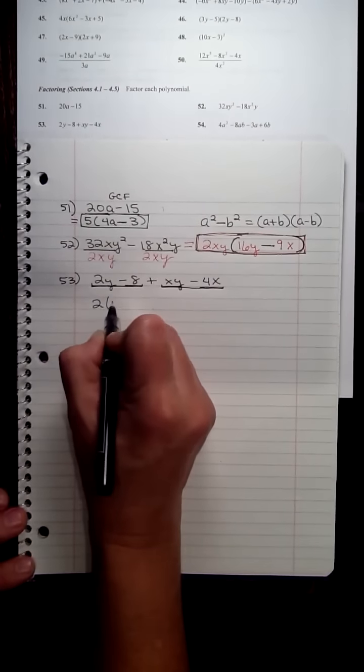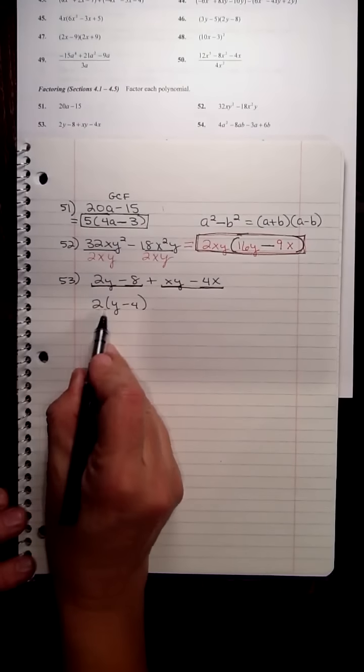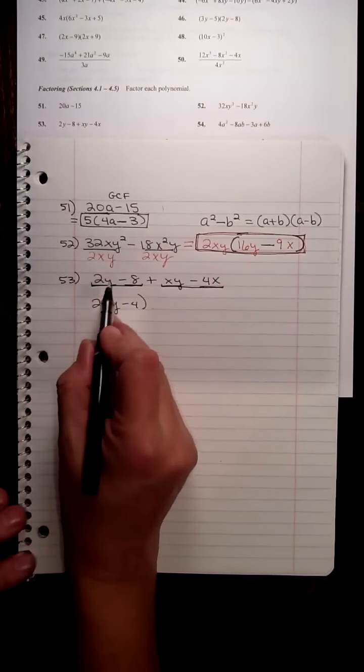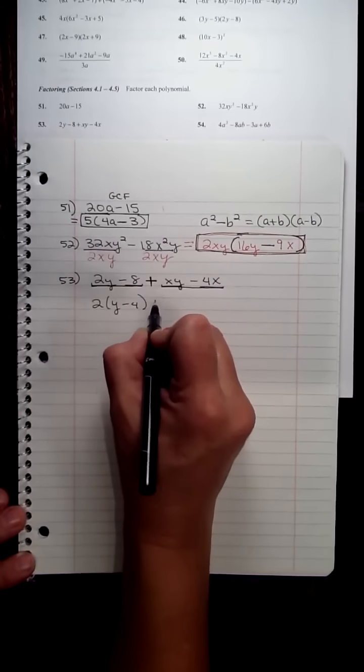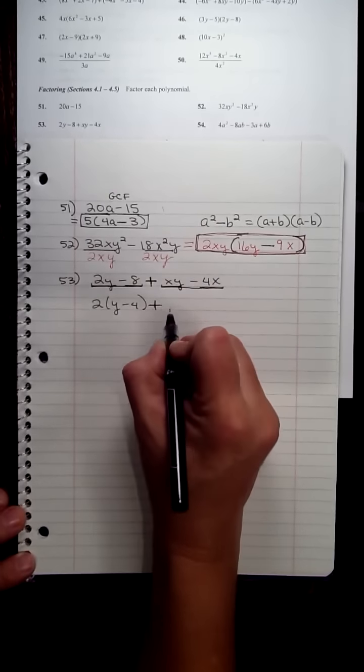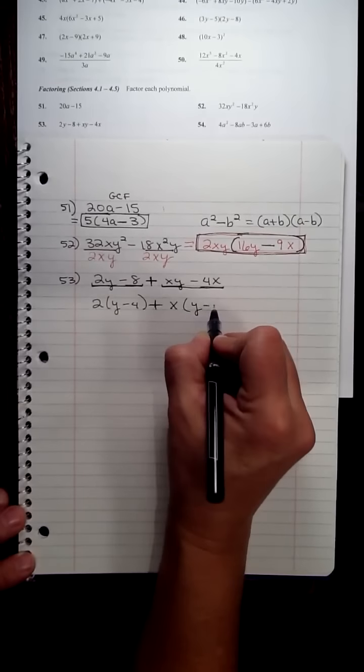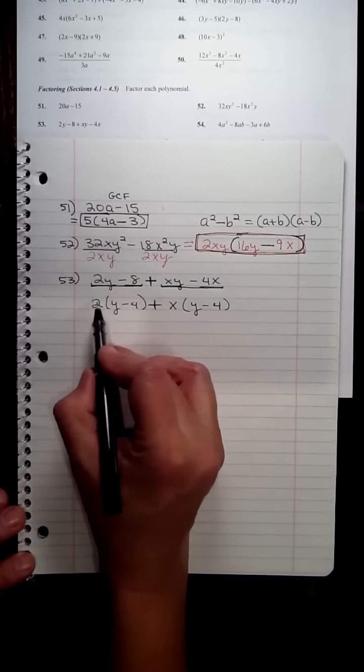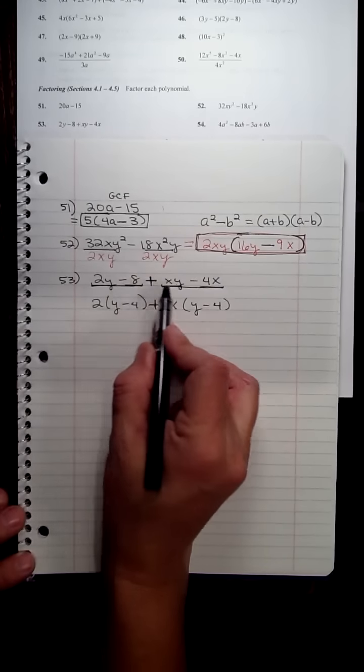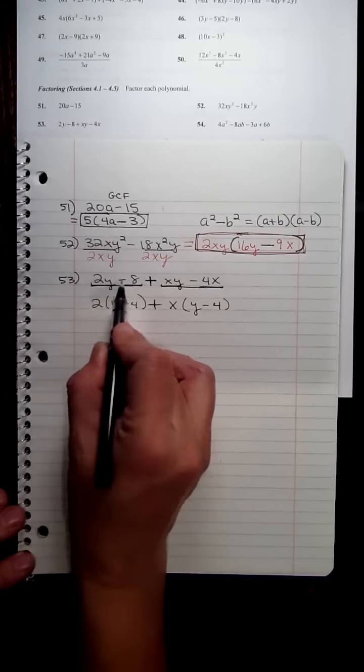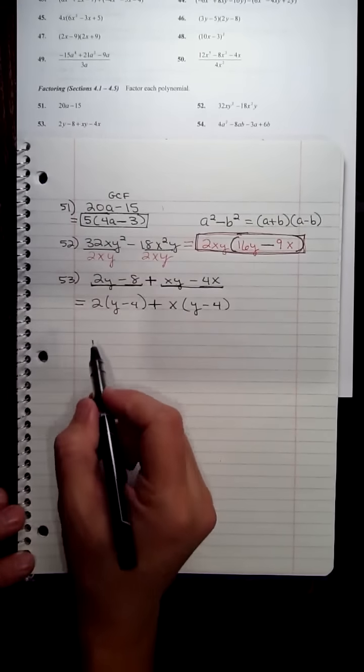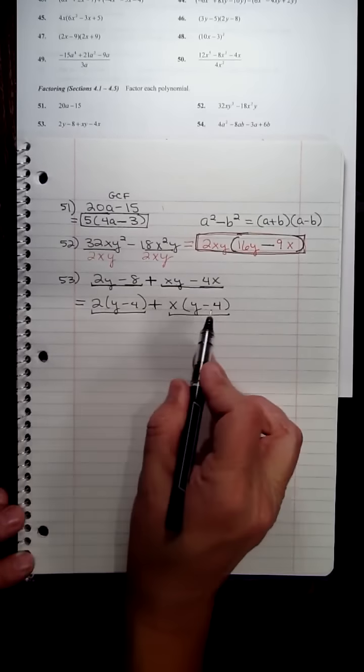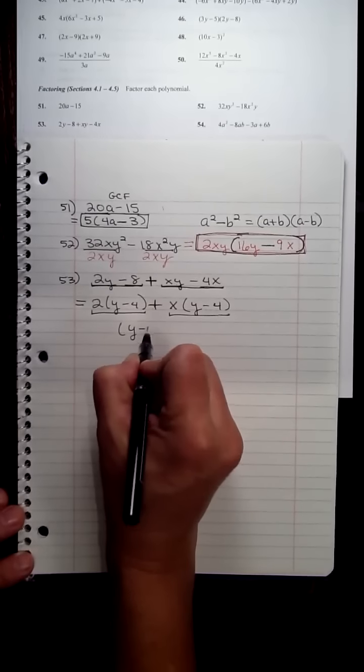And the first two both have a common 2. So 2 times y would be 2y. 2 times negative 4 would be negative 8. So we factor the 2 out of the first two terms, and then we add to that plus the common factor of the second two terms is an x. And when we factor out x or divide both of these by x, we have y minus 4. So if you distribute, you would return to the first expression. The advantage of this second expression is instead of having four terms, we have two big terms that both have y minus 4 in common.